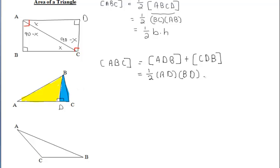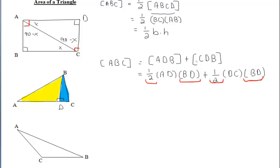Keep in mind, our base and height always have to form a right angle. Then to find the area of triangle CDB, we do one half of our base, which is CD, times our height, which is BD again. Looking at this, we can factor out one half BD from both of those terms. So let's go ahead and do that — if we factor out one half BD, we're left with the quantity AD plus DC.